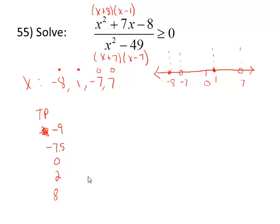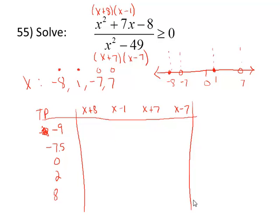I'm going to list all the factors and we'll build our sign chart. When -9 gets substituted in, all four of these expressions are negative: -9 + 8, -9 - 1, -9 + 7, and -9 - 7. When I substitute in -7.5, the only change is -7.5 + 8 is a positive 0.5, positive. The other three are all negative. With 0: +8 is positive, 0 - 1 is negative, 0 + 7 is positive, 0 - 7 is negative.